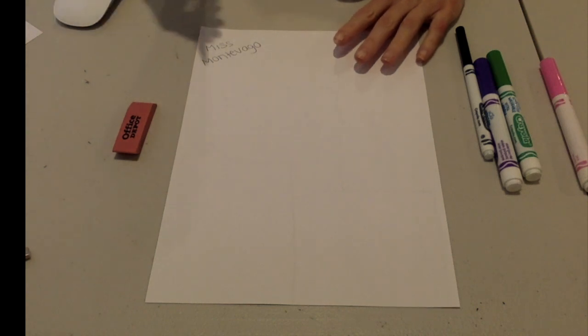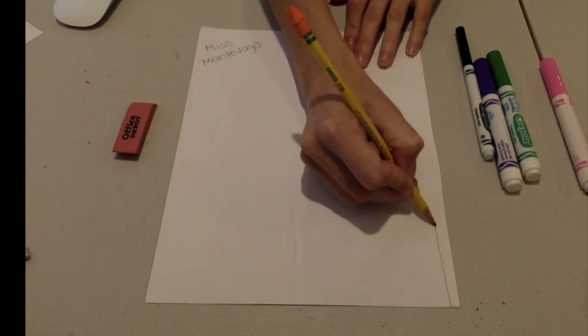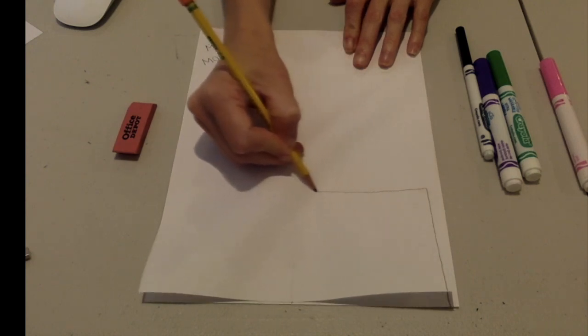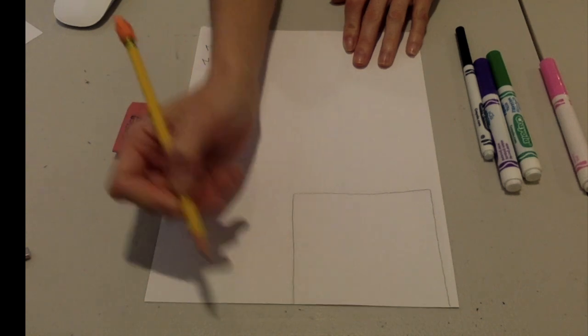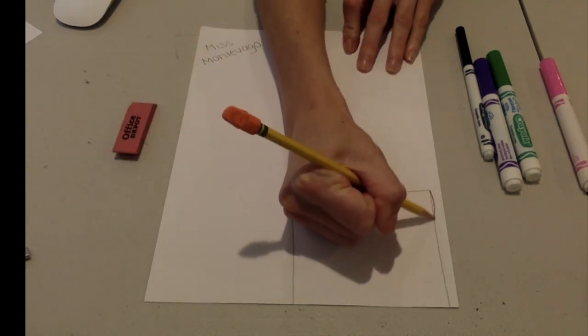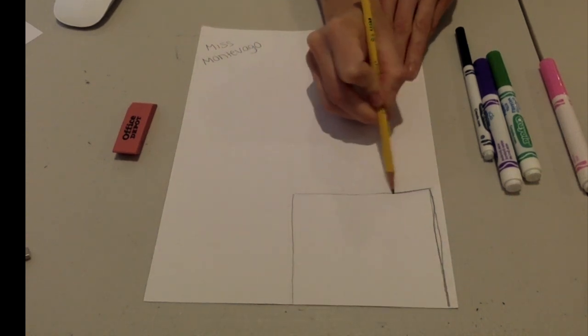The first thing I'm going to have you do is draw a rectangle at the bottom of your paper. This is going to be the body of your llama, so make it pretty big. You don't have to go back over the lines, I'm just making it a little darker so you can see it.